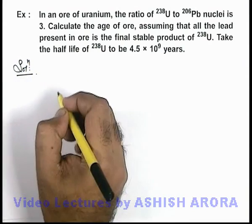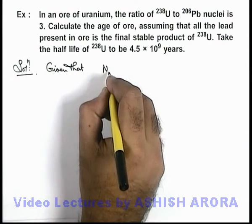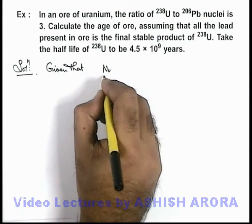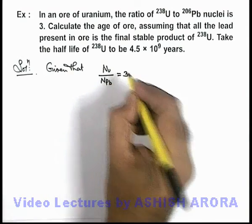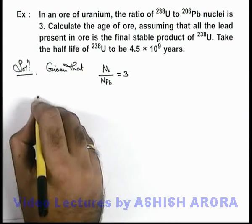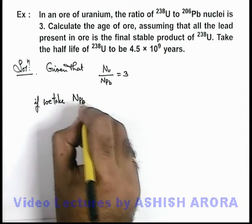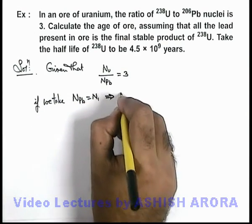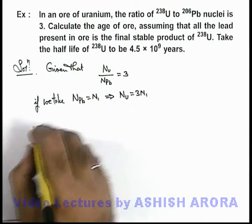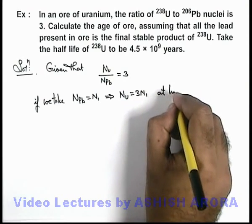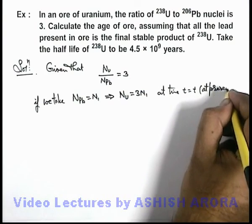Now in this situation, we can see we are given that the value of nucleus of uranium to number of lead nuclei is equal to 3. If we take the number of lead nuclei to be equal to N1, this implies at this instant, the number of uranium nuclei will be 3N1. This we can take at time t equal to t, which is at present, which we can call as age of ore.